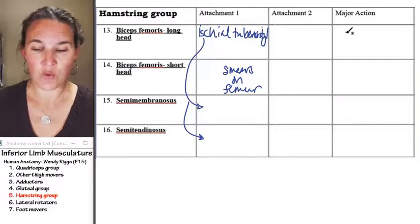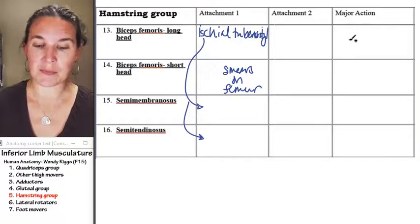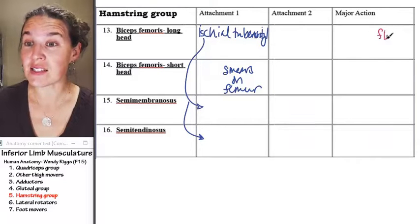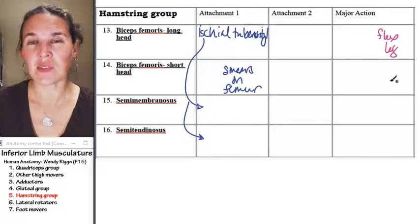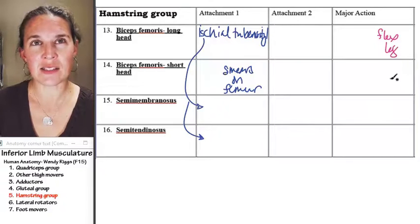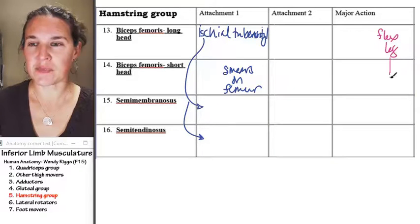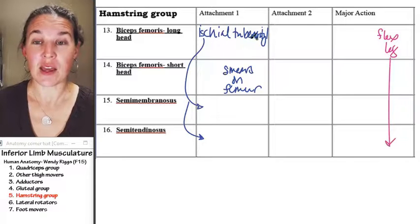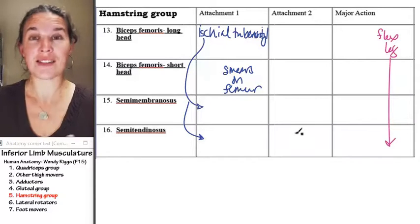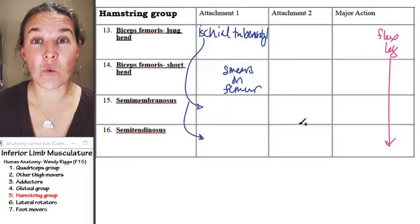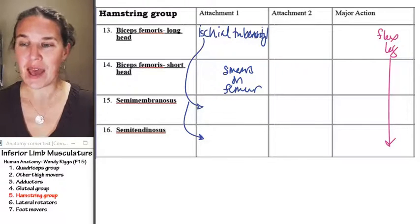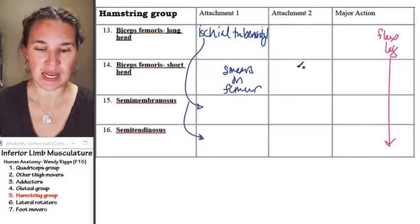The major action for all of these guys is they all flex the leg. They all flex the leg, which means where do they need to attach? They, no matter what, they have to attach to the tibia or the fibula somewhere on the leg. So let's break it down and figure out where everybody attaches distally.